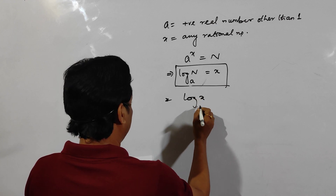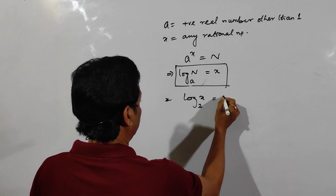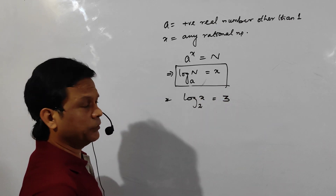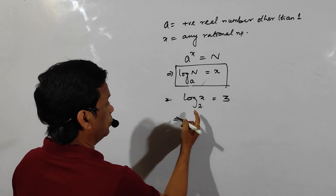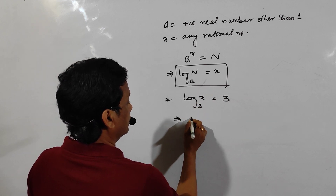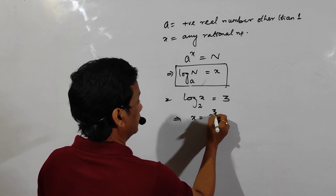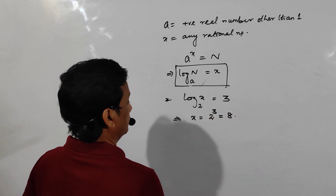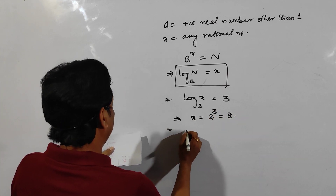Now: log of x to the base 2 is equal to 3. What is the value of x? By definition, 2^3 = x, so x = 8.